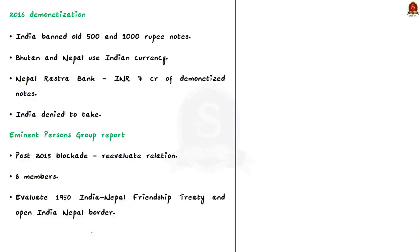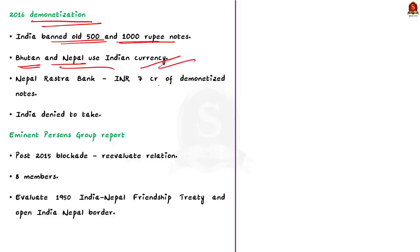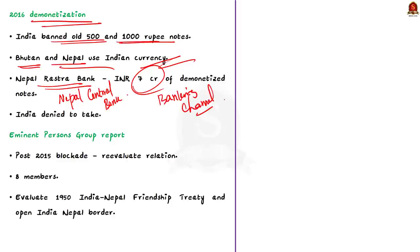The next issue arose during demonetization. On November 8, 2016, India announced a ban on old 500 and 1000 rupee notes, which affected both Bhutan and Nepal since Indian currency is widely used there. Nepal wants India to take back demonetized notes worth Rs. 7 crore from Nepal Rastra Bank, claiming this amount came through banking channels, not informal channels. India rejected this request.